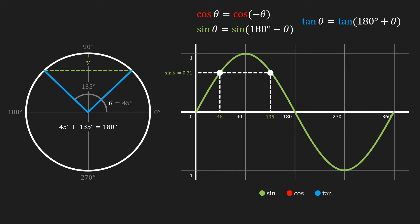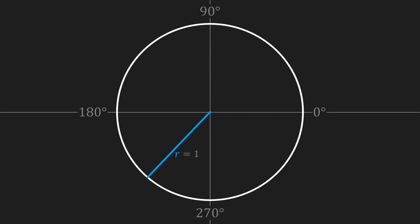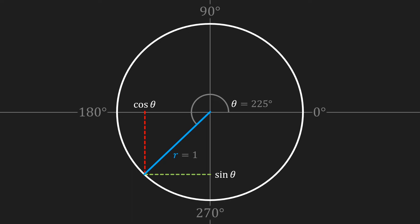You can derive this information from the unit circle or the graphs of the corresponding functions. To elaborate a bit more, I want to have a look at vectors and how we can use trigonometric functions together with them. So let's say that we have an angle of 225 degrees. We read the cosine of theta on the x-axis and the sine of theta on the y-axis. If we want to construct a direction vector at a 225-degree angle, the x component of that vector would be equal to the cosine of theta and the y component would be equal to the sine of theta. If we don't want a unit vector, we can just multiply the x and y components with the desired length of our vector.